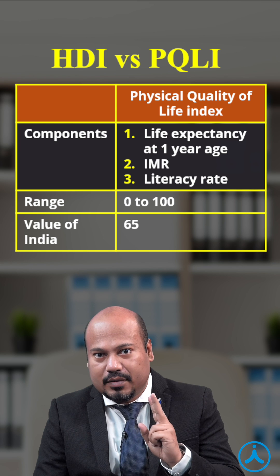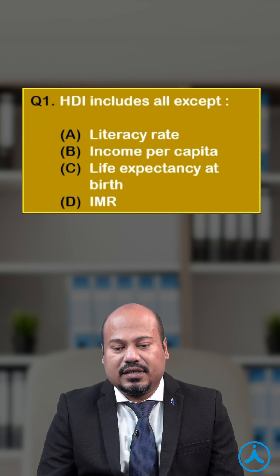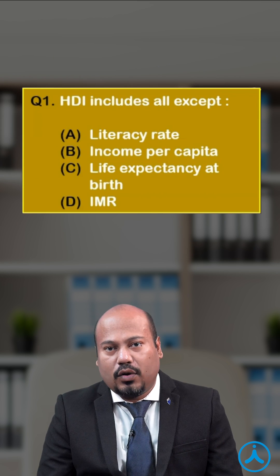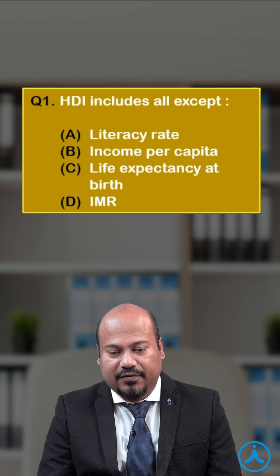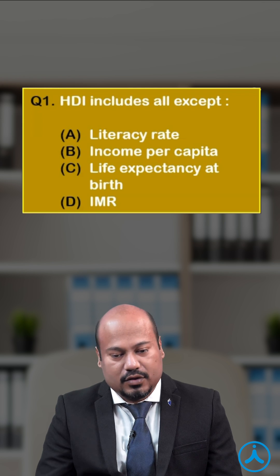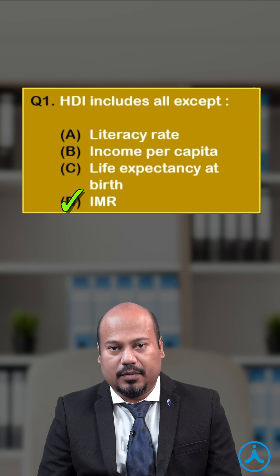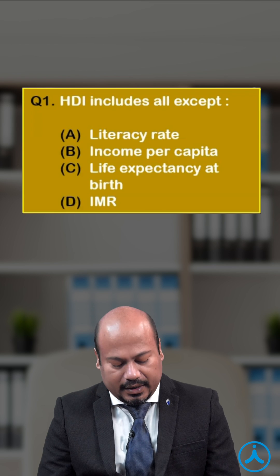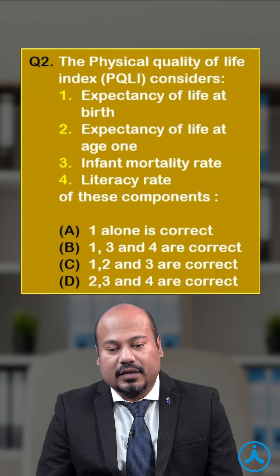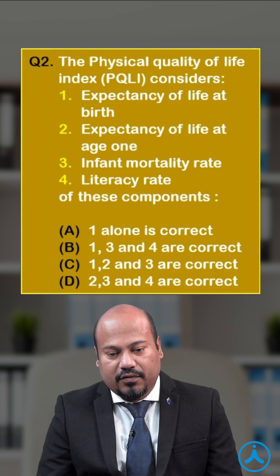Let's solve two high-yield MCQs. 'HDI includes all except: literacy rate, income per capita, life expectancy at birth, or IMR?' The answer is IMR, because IMR is a component of PQLI, not HDI.